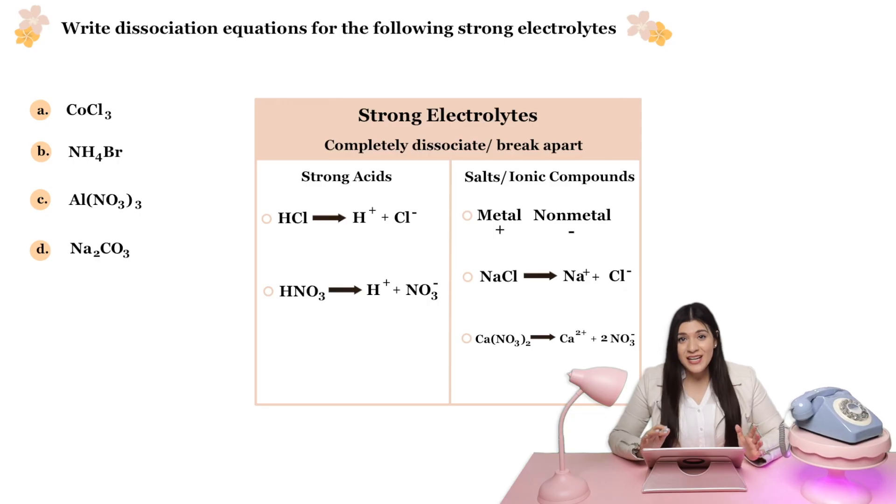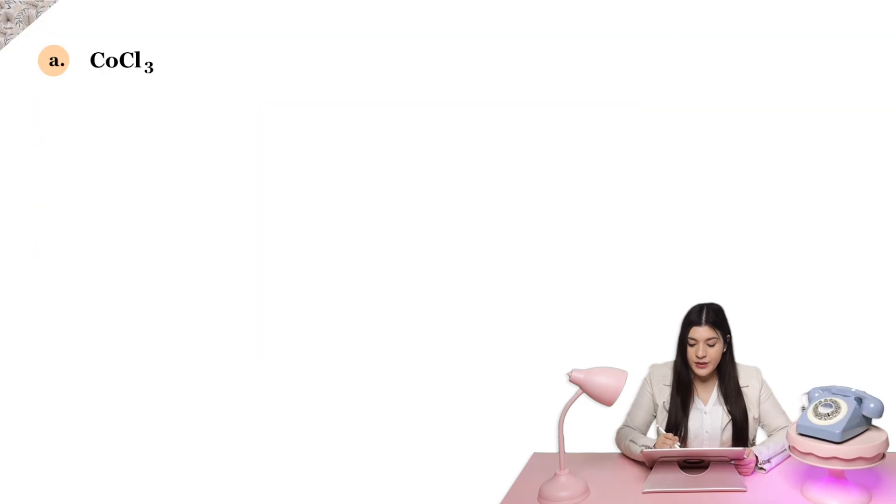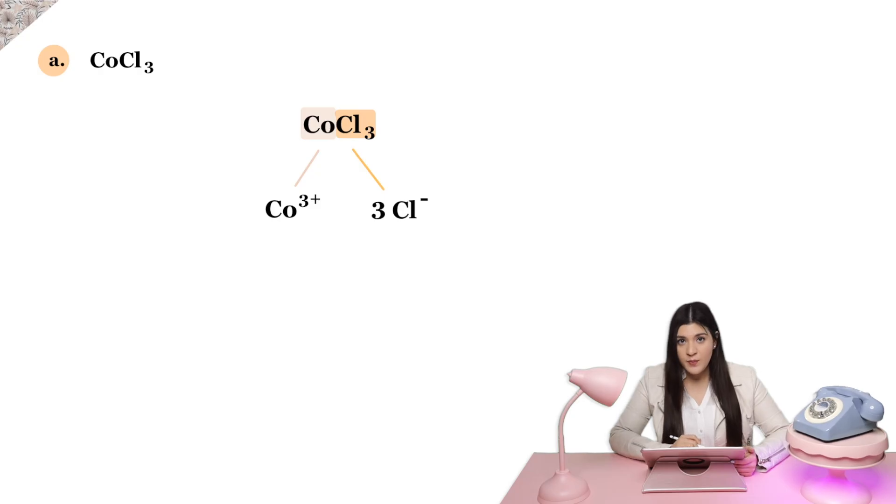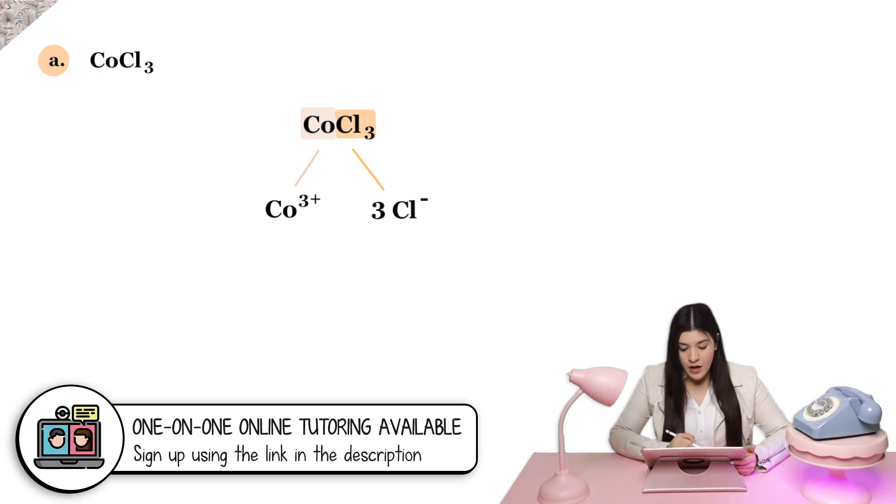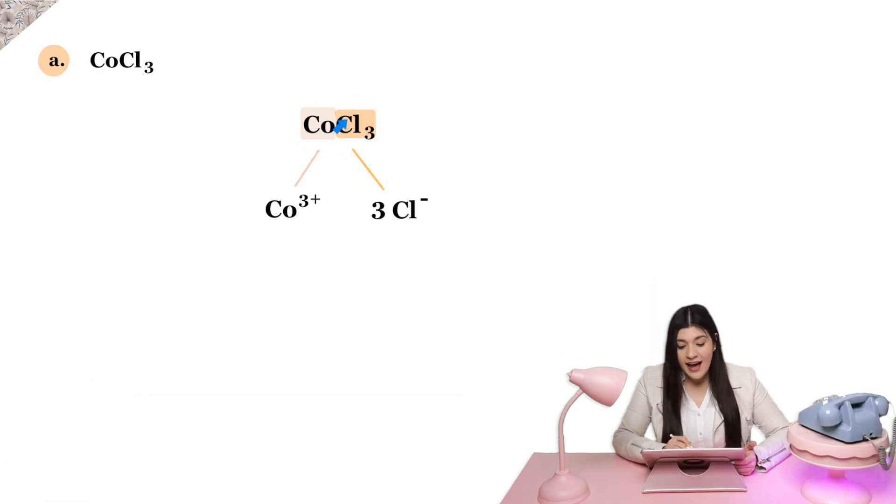Now that we understand how to break everything apart and what a strong electrolyte is, let's start off with part A. The first thing with part A, I'm going to identify my metal and my nonmetal, and then the charges for each. So this is the metal that we have, cobalt. It has a 3+ charge. If you didn't know what the charge was for cobalt, that's okay. We could actually figure it out by just looking at this formula, this chemical formula.